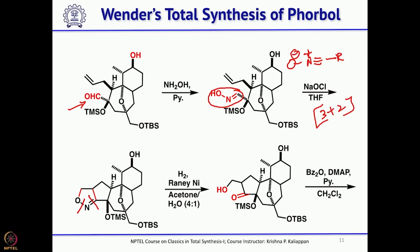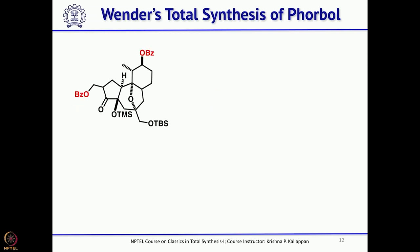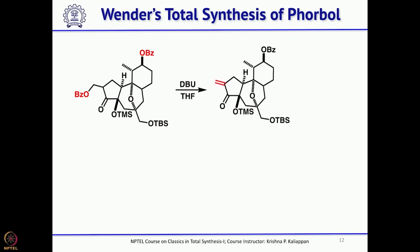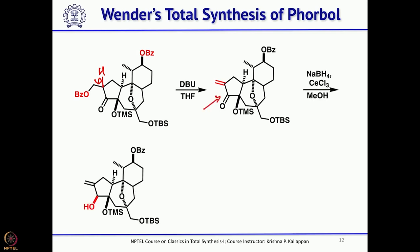Both primary and secondary hydroxyl groups were protected as benzoates. Treatment with DBU caused elimination to give the exocyclic double bond; since this exocyclic enone is somewhat unstable, it was immediately reduced under Luche conditions — sodium borohydride in the presence of cerium chloride — facilitating a 1,2-reduction to give the allylic alcohol.